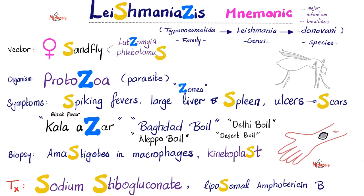Now on to the mnemonic — Leishmaniasis. Just write it like this. What's the family of this organism? Trypanosomatida. And what's the genus? Leishmania. And what's the species? We have many. Donovani is common, especially with visceral Leishmaniasis.